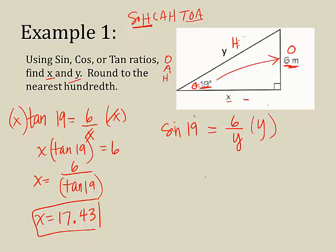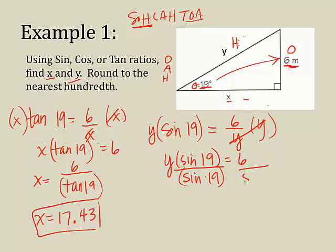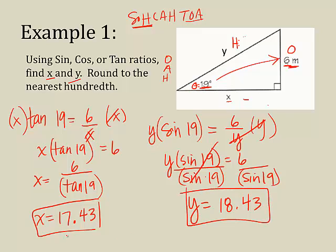So again, we're going to do the same thing. We're going to multiply by y. So y times the sine of 19 equals 6, and divide by the sine of 19. Don't separate the sine from 19. Those stick together. So that's what I put in my calculator. 6 divided by the sine of 19. And I get 18.43. So I've solved for my two missing sides.